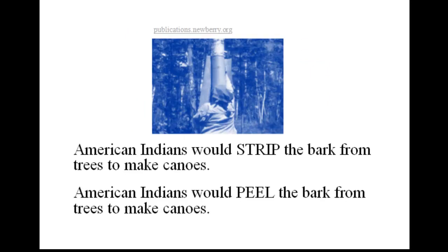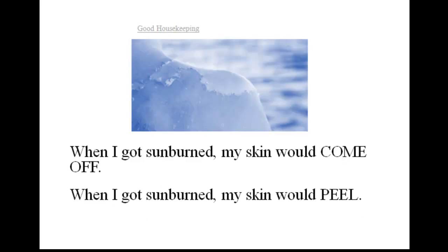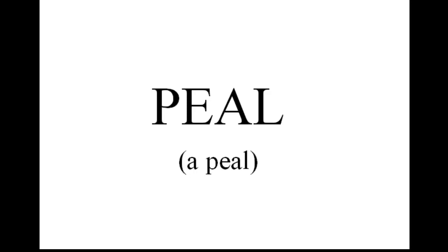American Indians would strip the bark from trees to make canoes. American Indians would peel the bark from trees to make canoes. To peel means to come off. When I got sunburned, my skin would come off. When I got sunburned, my skin would peel.